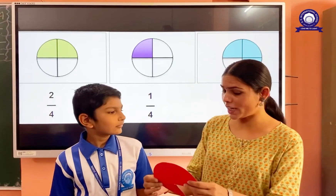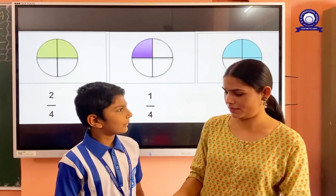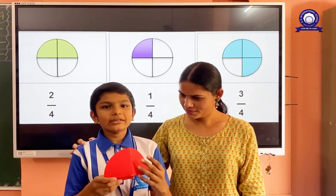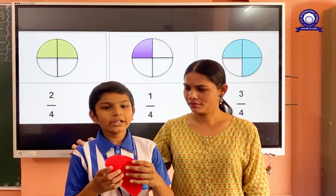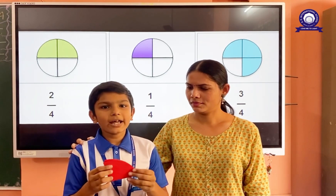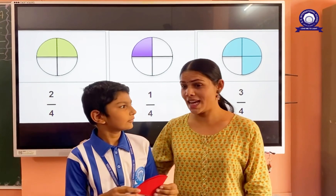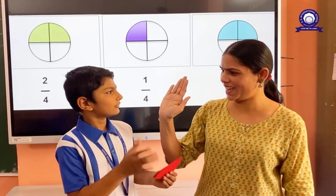Hi Chubh. Can you explain to us what a quarter is? When something is divided into 4 equal parts, each of those parts is a quarter of that thing. Very good. Very nice.